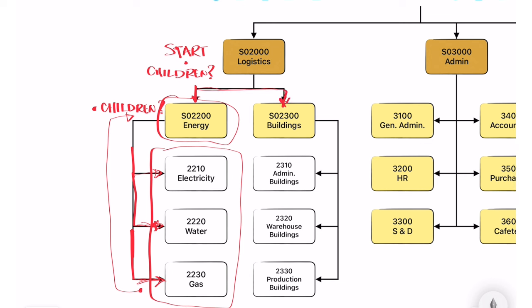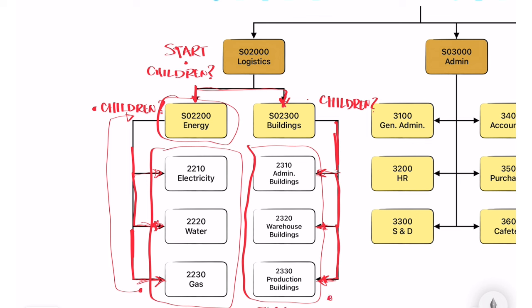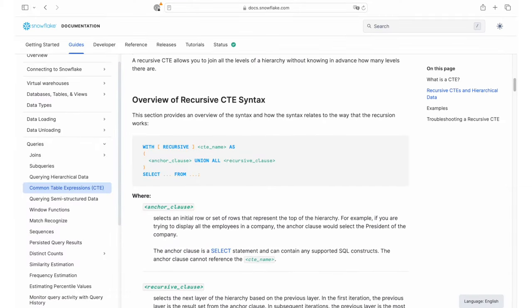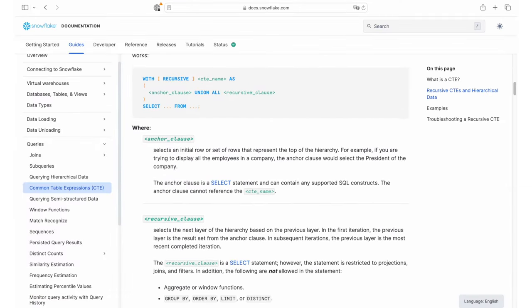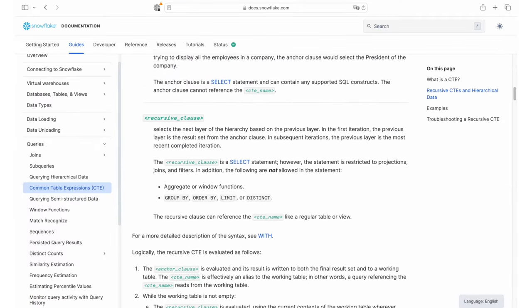We're not done yet though, as there's another branch — buildings. We'll traverse this branch and sum up everything along. Finally, we're done with all children of logistics. So we'll move up and add the costs of the logistics cost center itself. And now we're done. The process I've just described is called recursion. Snowflake can do recursive queries natively by using the recursive common table expression queries, so-called CTEs.